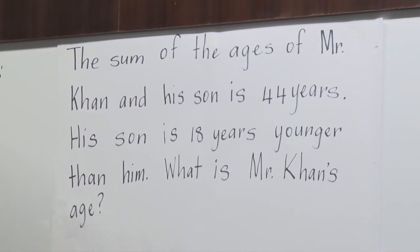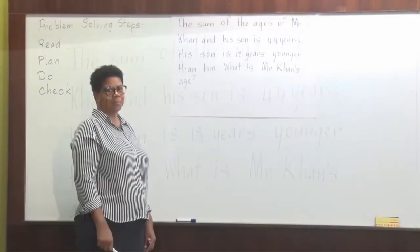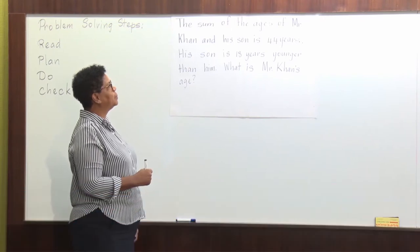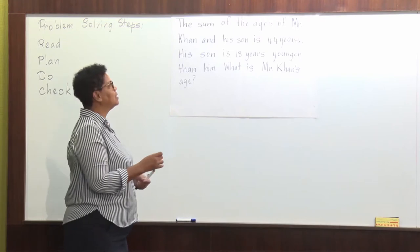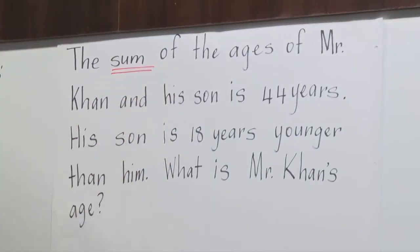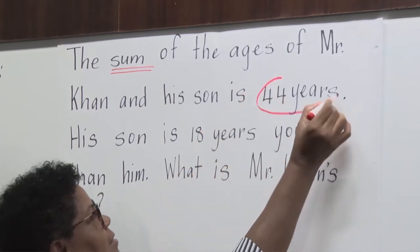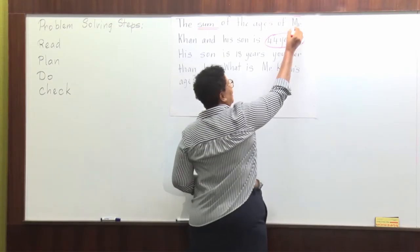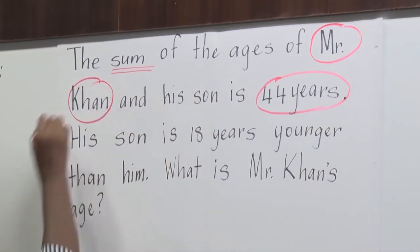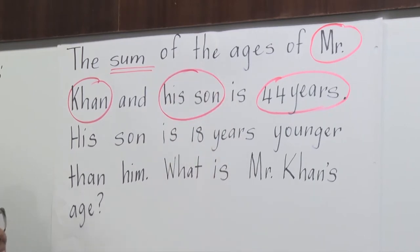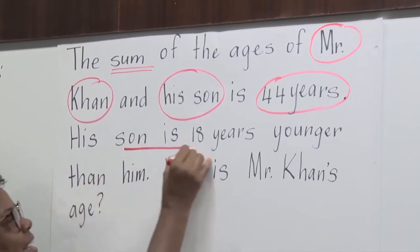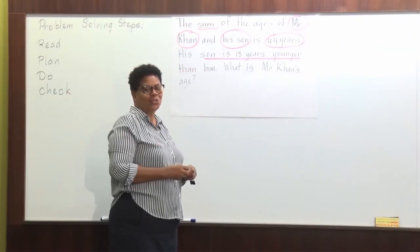Let us read problem number two. As I read, you can read at home. The sum of the ages of Mr. Kahn and his son is 44 years. His son is 18 years younger than him. What is Mr. Kahn's age? Let's try to understand our problem. The sum of the ages is our whole: 44 years. The shares are Mr. Kahn and his son. We know that his son is 18 years younger than him, so we have two unequal shares.